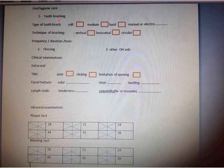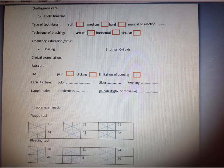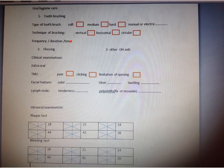For oral hygiene care, ask about tooth brushing: the type of toothbrush — soft, medium, or hard; whether it is manual or electric; the technique — vertical, horizontal, or circular; and if the patient is a dental professional, write down the specific technique name. Ask about frequency — how many times a day; duration — how many minutes; and time — night or daytime. Ask whether the patient flosses or not.